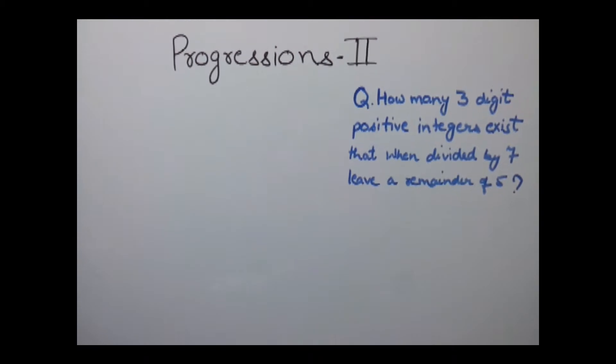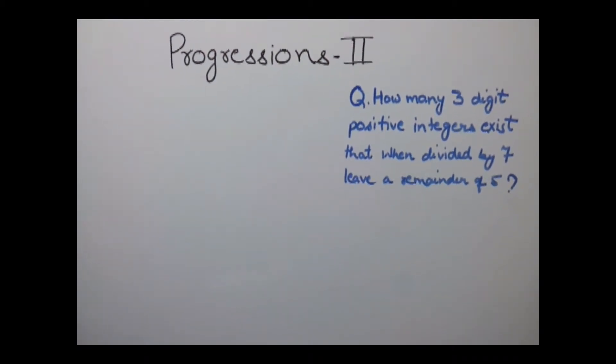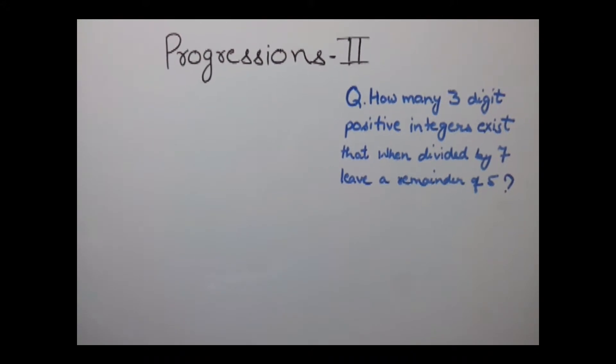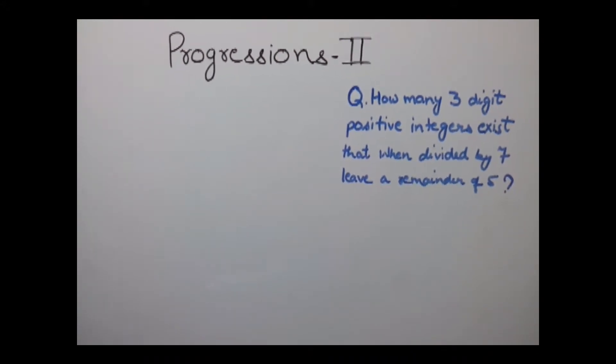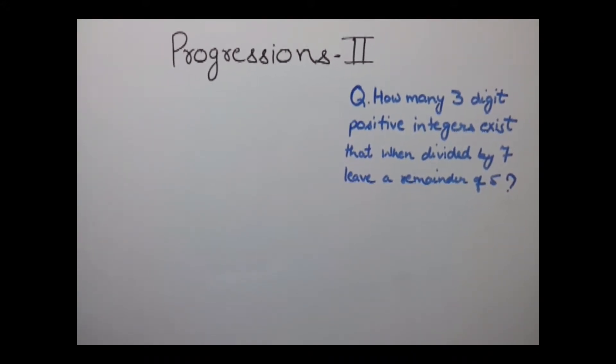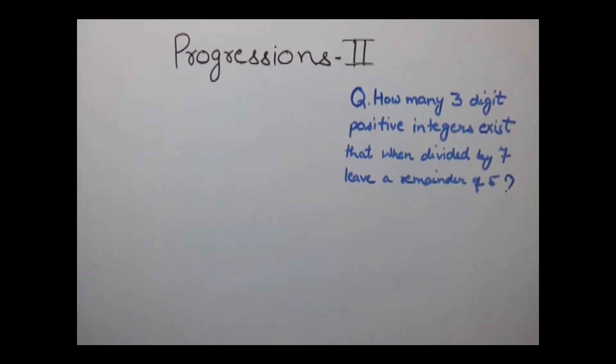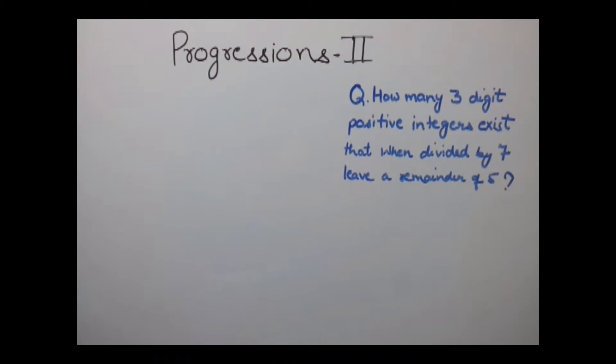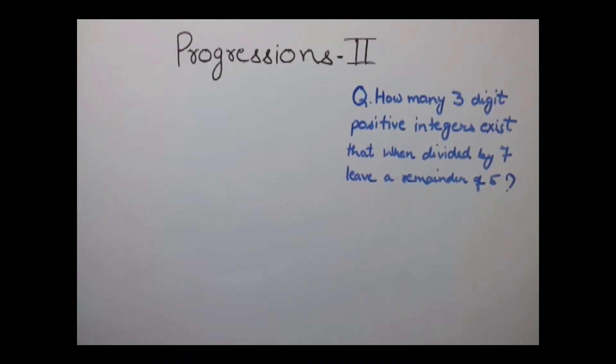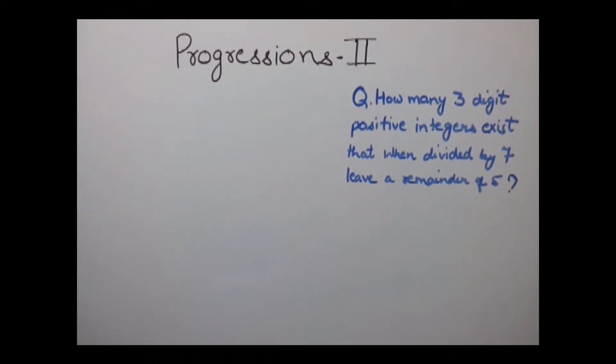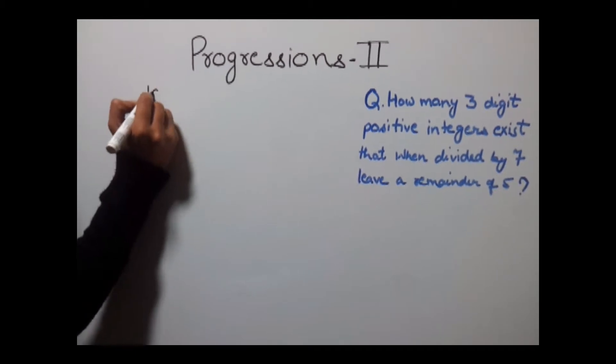Our next example is: how many 3-digit positive integers exist that when divided by 7 leave a remainder of 5? In this question we need to find the total number of 3-digit positive integers which when divided by 7 give a remainder of 5.